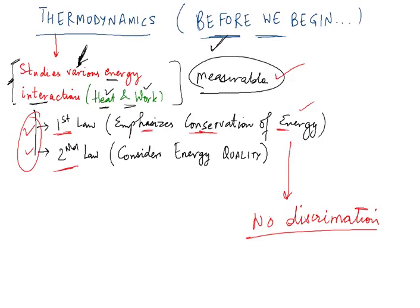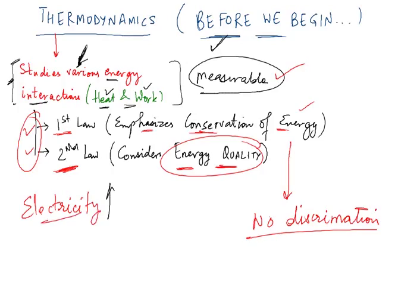The second law states that all kinds of energies are not equal—they're not of the same quality. There is a term called energy quality. For example, electricity is an energy of superior quality or superior form, while heat is an energy of inferior form. These energy quality considerations are what we deal with in the second law of thermodynamics.